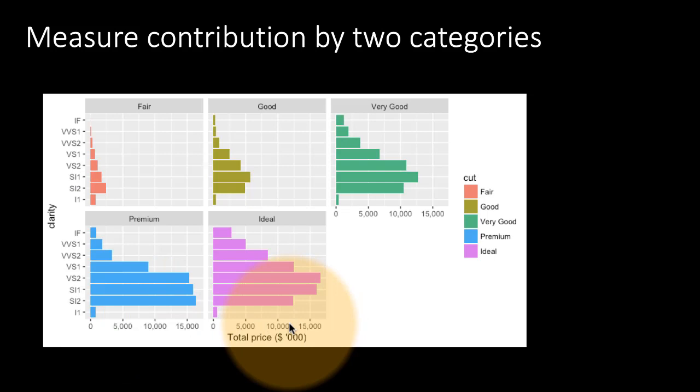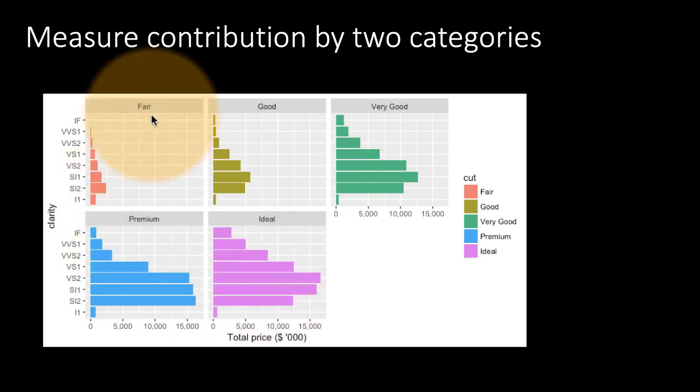We're trying to see for every level of clarity how much is the total price being contributed by that category—of the total sales, how much does each clarity account for. But we're also breaking it up by the cut of the diamond. So the two categories are clarity and cut, and the measure is total price, which is the sum of the price.